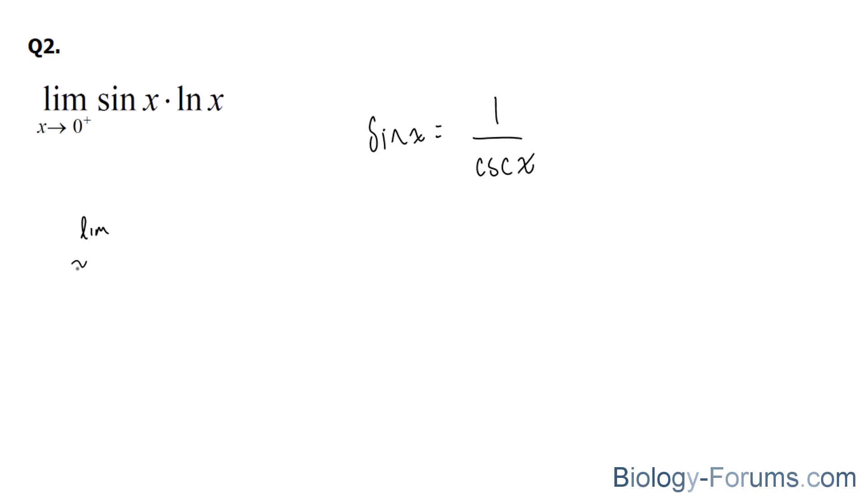The limit as x approaches 0 from the plus end is equal to 1 over cosecant x. And at the top, we will write down ln x.